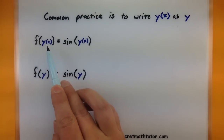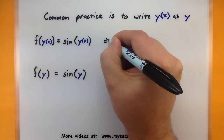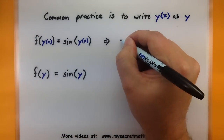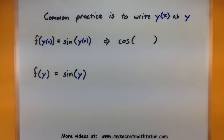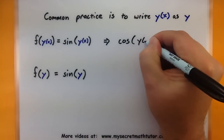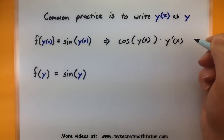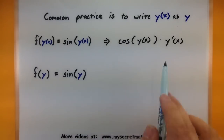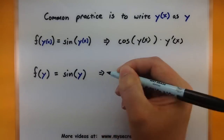So here I have my f function, and y of x is on the inside. So if I'm taking the derivative of this, I'd start with the derivative of the outside. Cosine is the derivative of sine. Our inside function is just going to stay exactly the same — y of x — then we'll multiply by the derivative of the inside. So this is what the chain rule looks like when you're using that function notation.